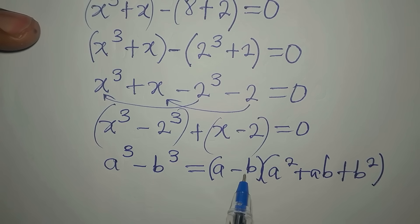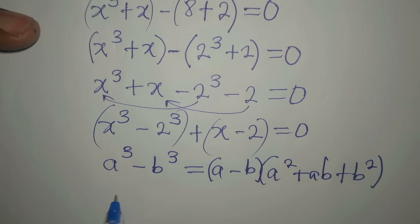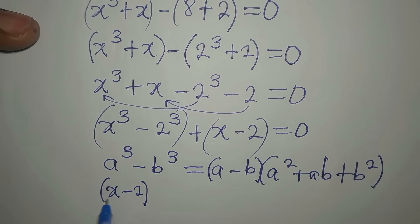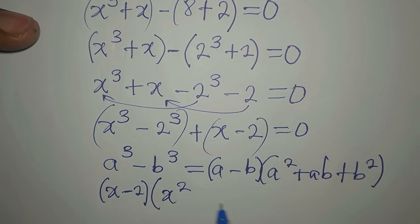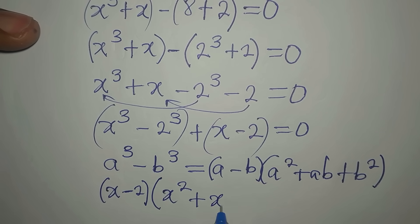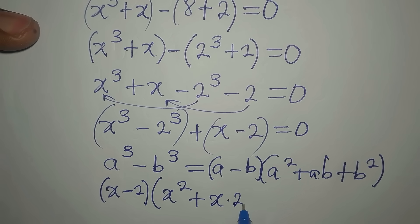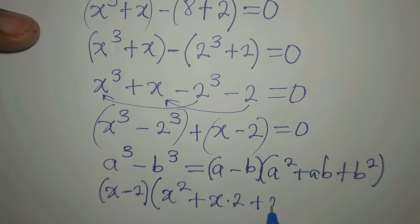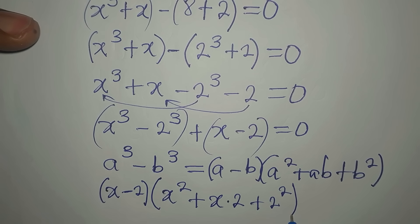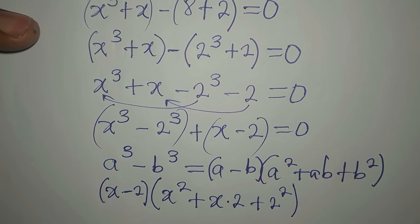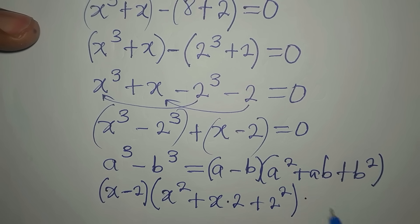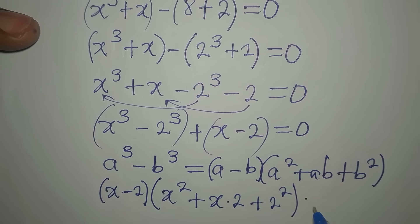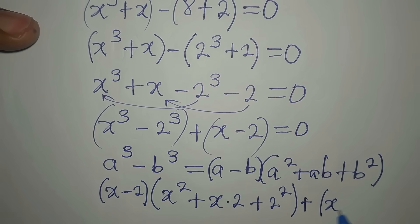Our a minus b now is going to be x minus 2. So x minus 2 in the first bracket. Then here we have x squared, then plus a, our a is x now, and our b is 2. So that means we have x times 2, then plus 2 squared for the b. Then we'll now equate. We will not equate to 0 yet. I have not written this, okay my bad, I have not written this. So I'm going to write plus open bracket x minus 2. Then we now equate to 0.